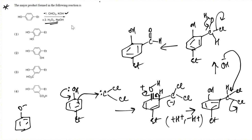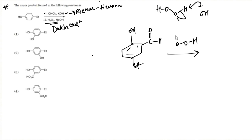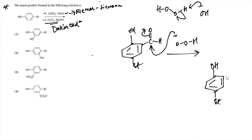The next step uses hydrogen peroxide in NaOH — this is the Dakin oxidation. In the presence of the base, OH⁻ takes up the proton from H₂O₂ to give the peroxide anion. The peroxide anion attacks over the carbonyl carbon, one of the pi bonds opens up, and we get a tetrahedral intermediate.